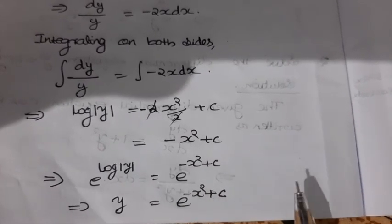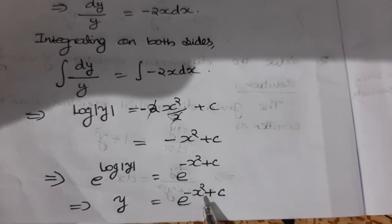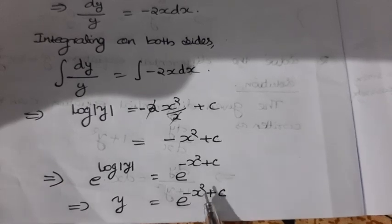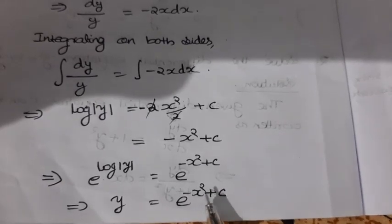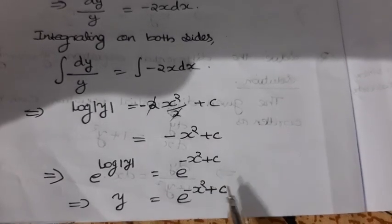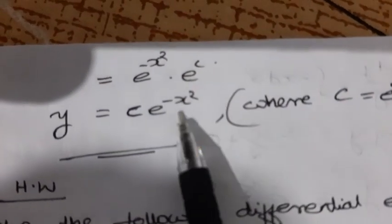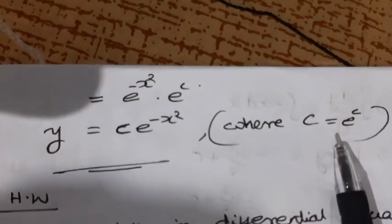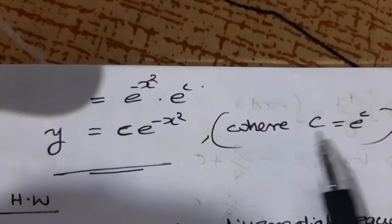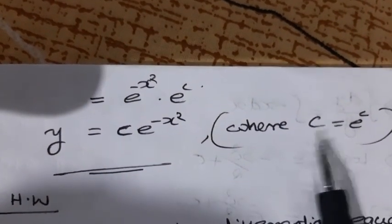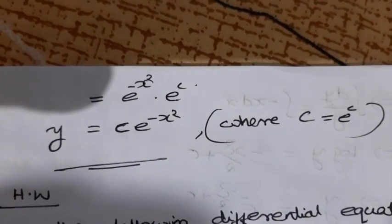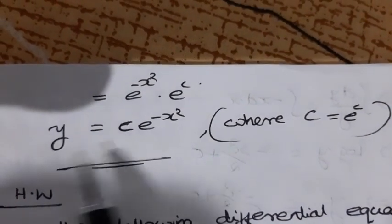Using the property e^(a+b) = e^a · e^b, we get y = e^(−x²) · e^c. Since e^c is again a constant, we write e^c = c. Therefore, y = c · e^(−x²) is the general solution.